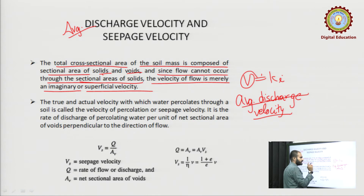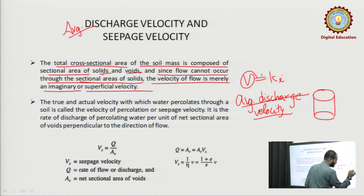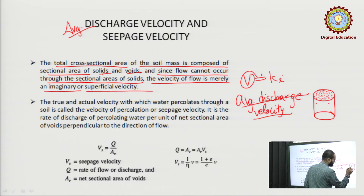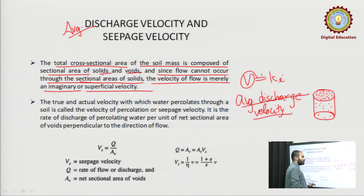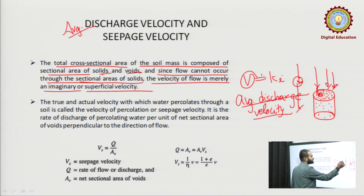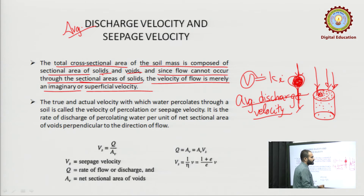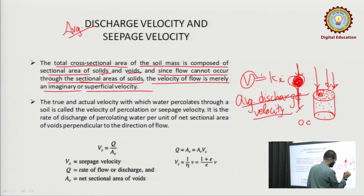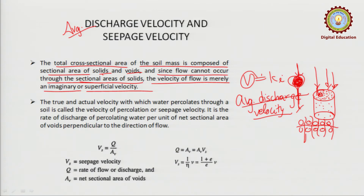When we compute V = Ki, we consider the whole cross-sectional area of the specimen. But the specimen contains soil particles — water cannot pass through solid particles, it passes only through the voids. So the concept of average discharge velocity is not actually correct in a practical sense; it is an imaginary or superficial velocity because we consider the whole cross-section as the discharge area.